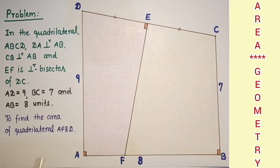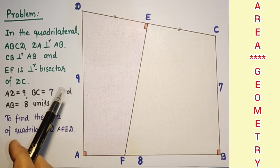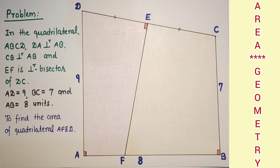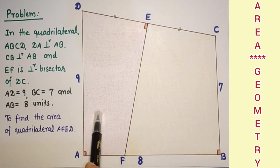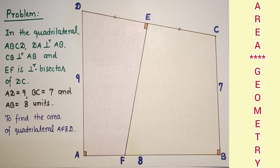We are given the side lengths: AD is 9 units, AB is 8 units, and BC is 7 units. We have to find the area of quadrilateral AFED.